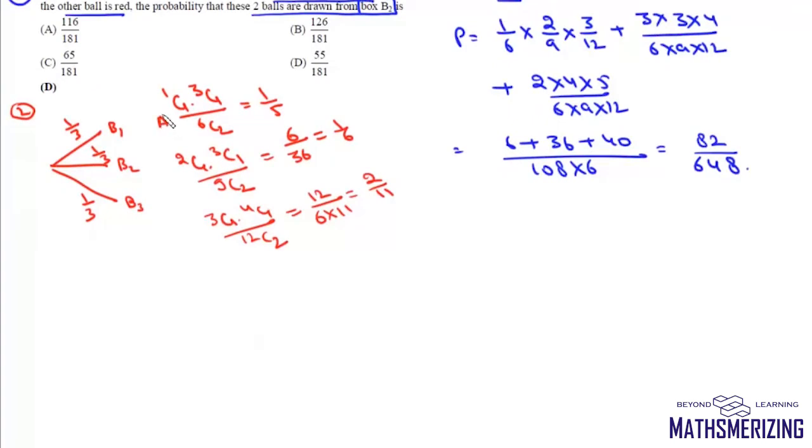Now if this event, say A, has already occurred, we have to find the probability that the ball is drawn from the box 2. So we have to find P(B2|A). So we will take this case in the numerator. So it will be 1 by 3 into 1 by 6 upon all the cases.